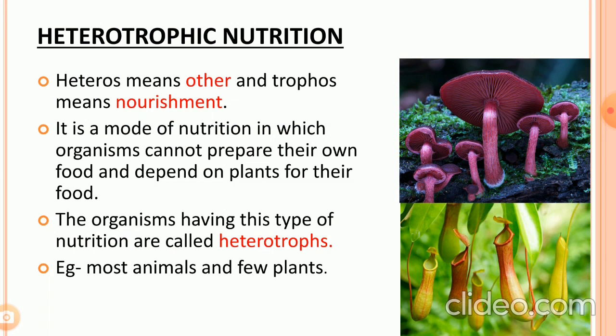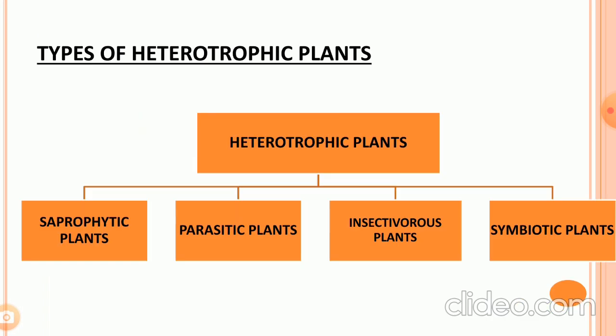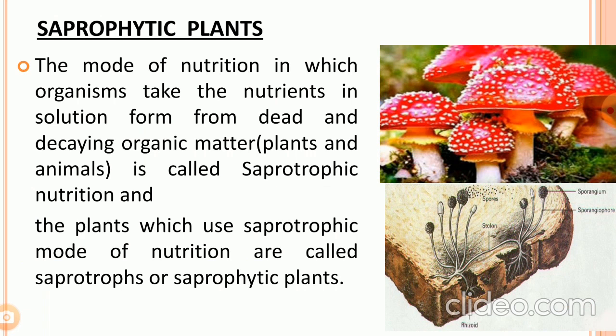Most animals like herbivores, carnivores, or omnivores, and a few plants have heterotrophic nutrition. There are four types of heterotrophic plants: first, saprophytic plants; second, parasitic plants; third, insectivorous plants; and fourth, symbiotic plants. We will discuss them one by one. First, saprophytic plants.